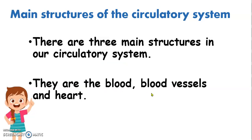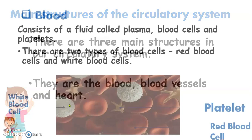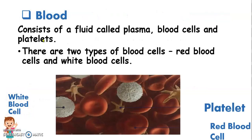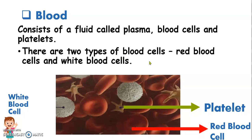The three main structures are the blood, blood vessels, and heart. Blood consists of a fluid called plasma, blood cells, and platelets. There are two types of blood cells: red blood cells and white blood cells.